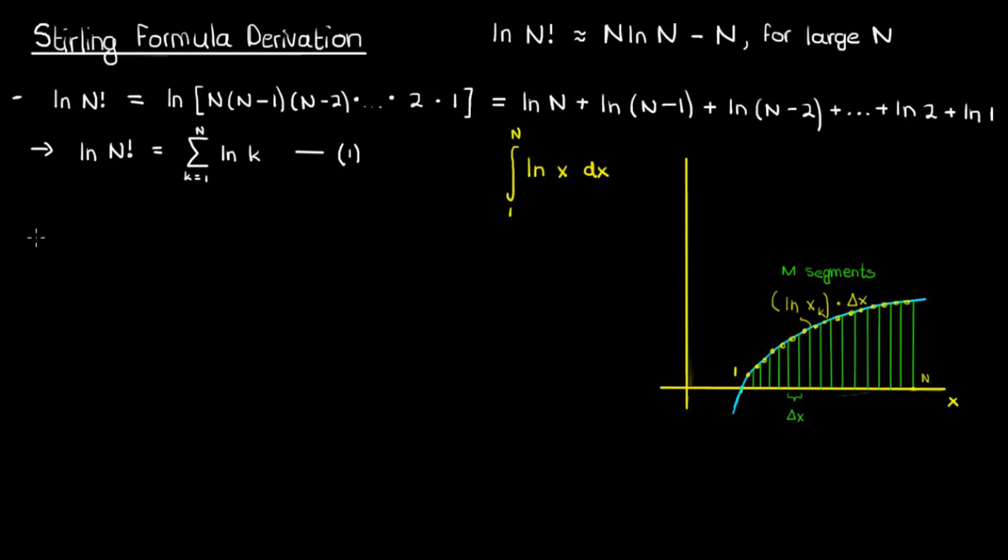The area under the curve A can be approximated by this summation, which is the sum from k equals 1 to capital M of ln(x_k) times delta x. If the number of segments that you use, the capital M, starts to get larger and larger...